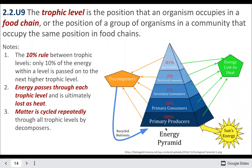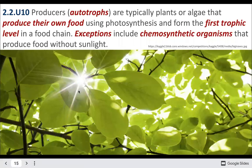Trophic level is your position in the food chain — what organisms you eat and what eats you. The first level is plants, the primary producers. Herbivores eat them, and so on. Because so much energy is lost as heat through respiration, only about 10% of energy taken in actually goes into creating more body mass. That's why energy pyramids tend to look like a pyramid — smaller at the top, larger at the bottom.